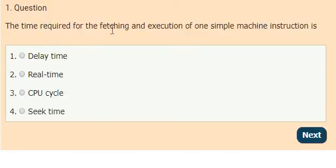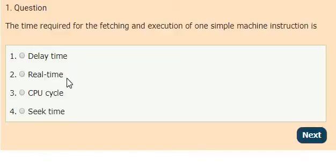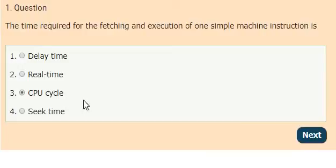Question 1: The time required for the fetching and execution of one simple machine instruction is options: delay time, real time, CPU cycle, seek time. The answer is option 3, CPU cycle.